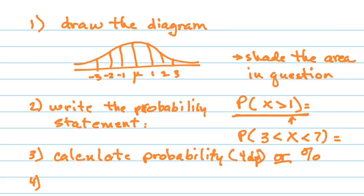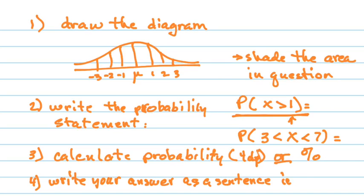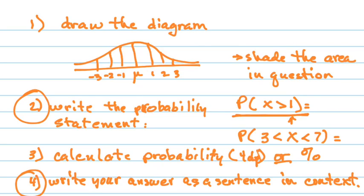The fourth and final part of this process is to write your answer as a sentence in context. That's the one that will bump you up or take you down. We have two big ones: writing the probability statement and then writing your answer. The mathematics — punching things into the calculator — is fairly easy. But being able to understand what it is that you're doing is the key here, and that's the focus of this probability section. Being able to write your answer as a sentence in context is critical.